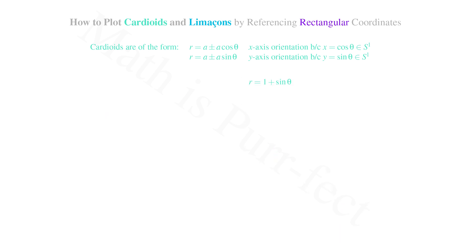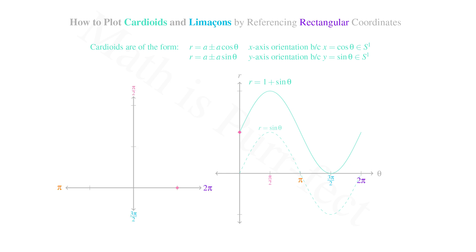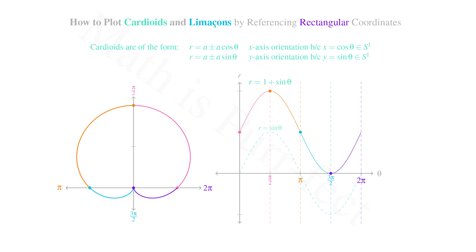Next, let's consider cardioids involving the sine function. Consider r = 1 + sin(θ). I claim this graph will be oriented along the positive y-axis, given the trend for cosine along the x-axis. Beginning with the graph of sin(θ), the only augmentation is adding 1, thereby translating the graph vertically one unit. In polar form, we begin at 0 radians with a radius of 1, then increase to a radius of 2 at θ = π/2. In quadrant 2 we decrease from 2 to 1 at θ = π, then in quadrant 3 we decrease to a radius of 0 by θ = 3π/2. Finally, in quadrant 4 we increase back to a radius of 1 where we began. Note how this cardioid is indeed oriented with its larger side along the positive y-axis.